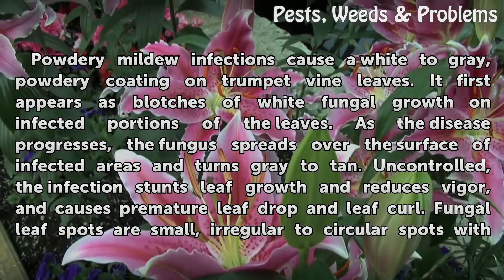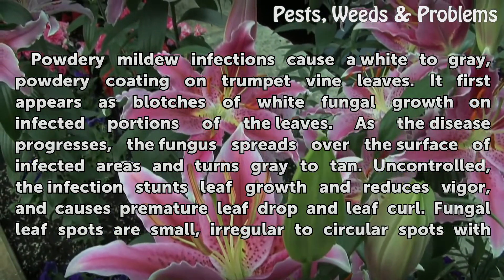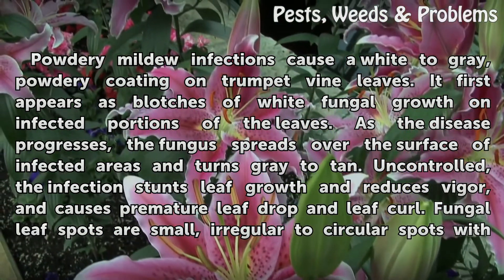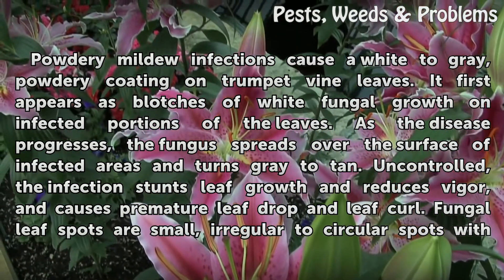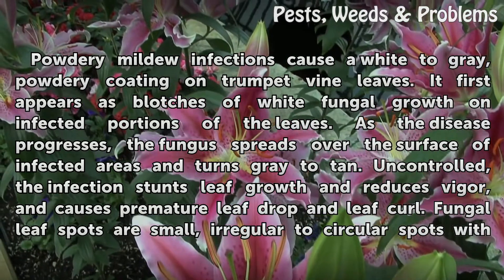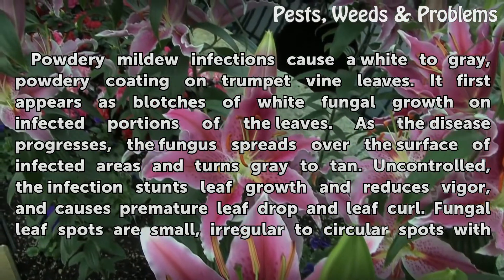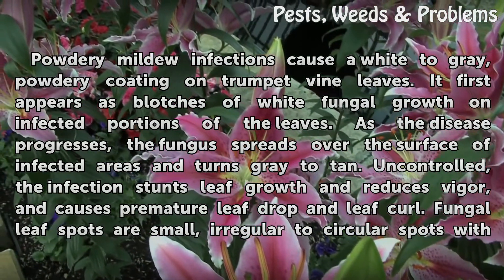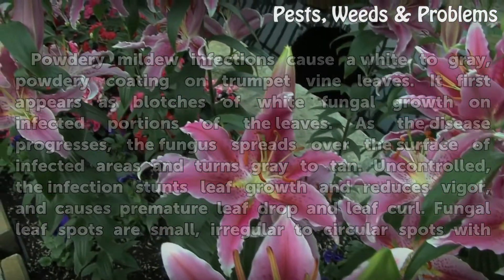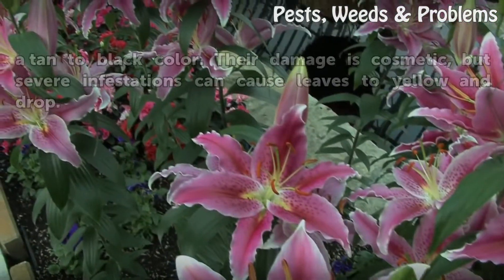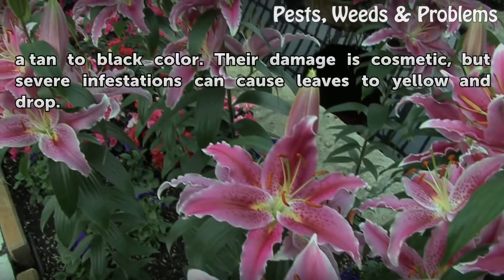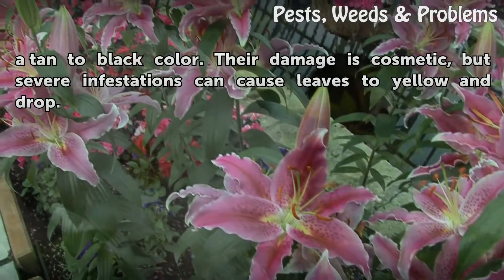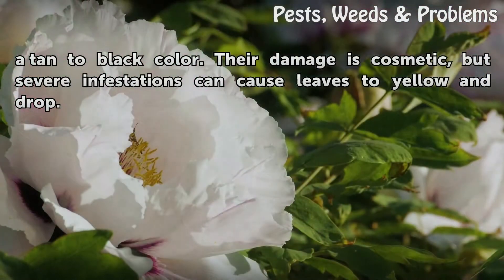Uncontrolled, the infection stunts leaf growth and reduces vigor, and causes premature leaf drop and leaf curl. Fungal leaf spots are small, irregular to circular spots with a tan to black color. Their damage is cosmetic, but severe infestations can cause leaves to yellow and drop.